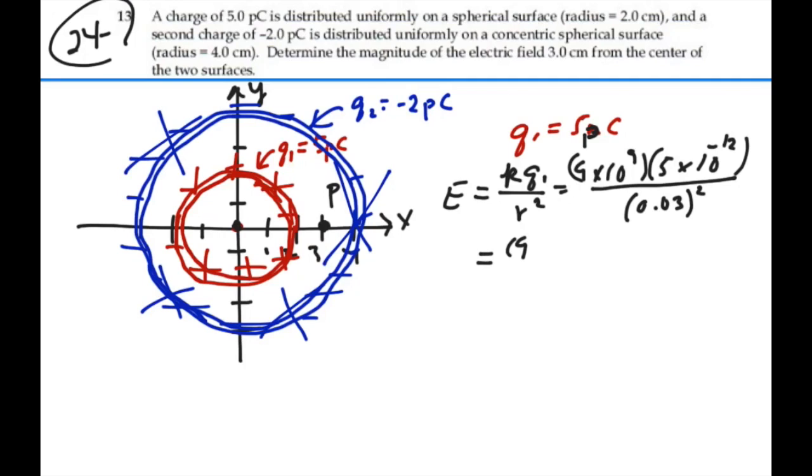So, this is 9 times 5 times 10 to the minus 3, over 3 times 3 times 10 to the minus 4. The 9 and the 3 times 3 cancel out. 10 to the minus 3 over 10 to the minus 4 is 10, so this is going to be 5 times 10, or 50 newtons per coulomb.